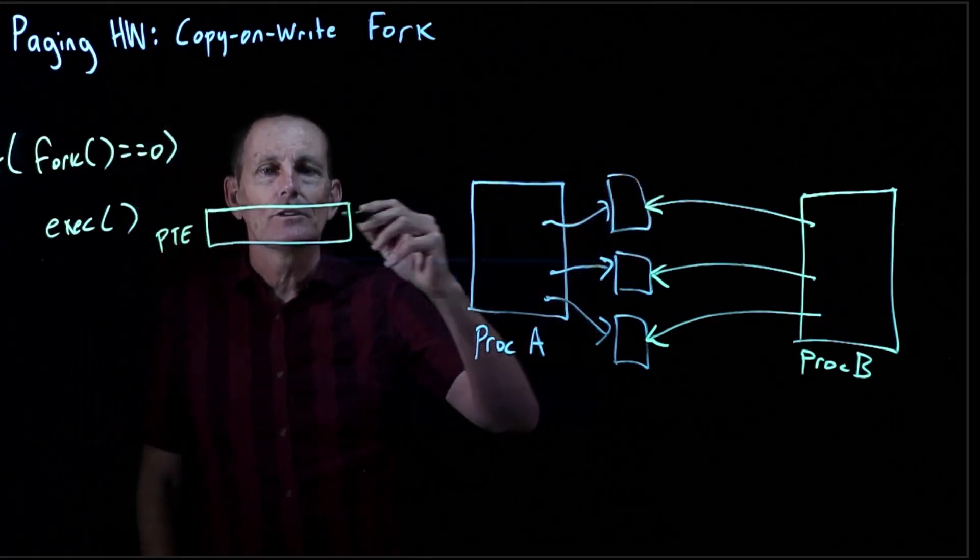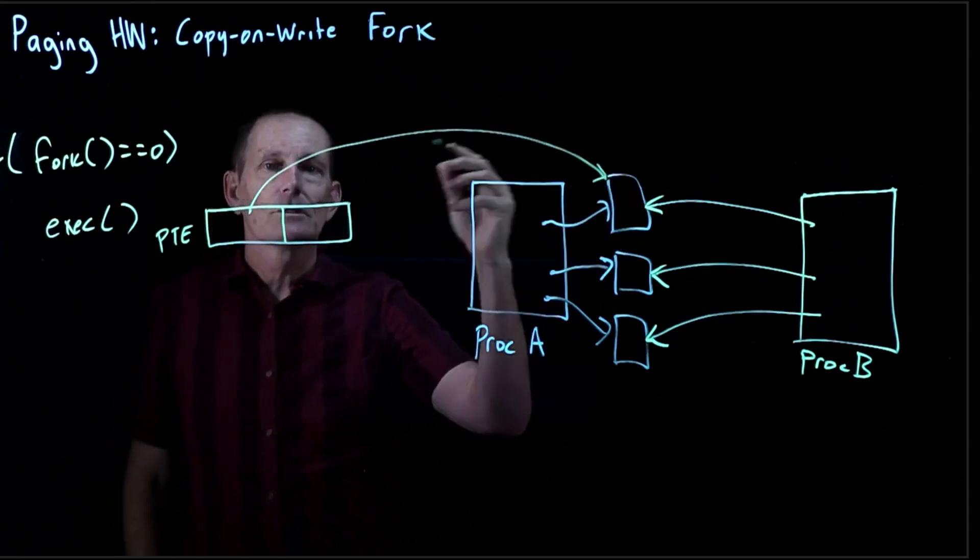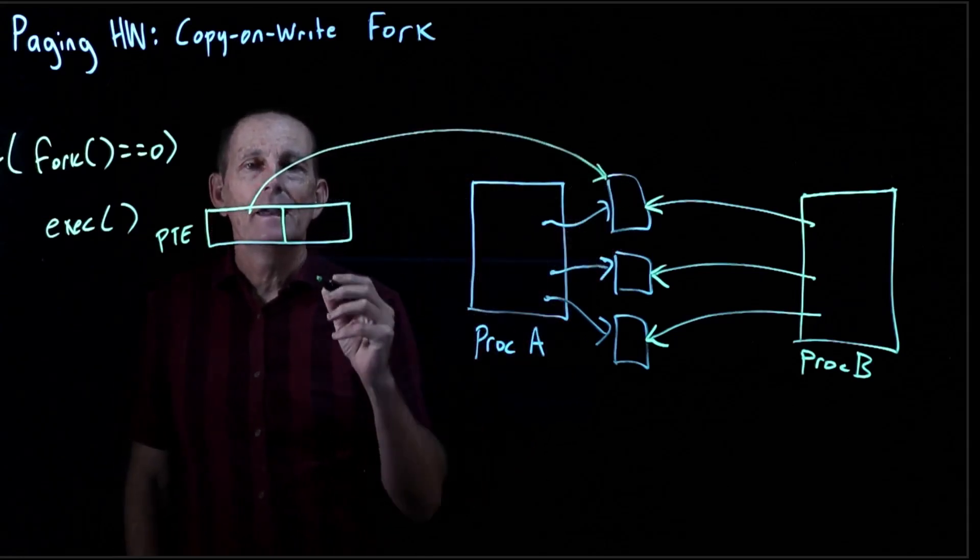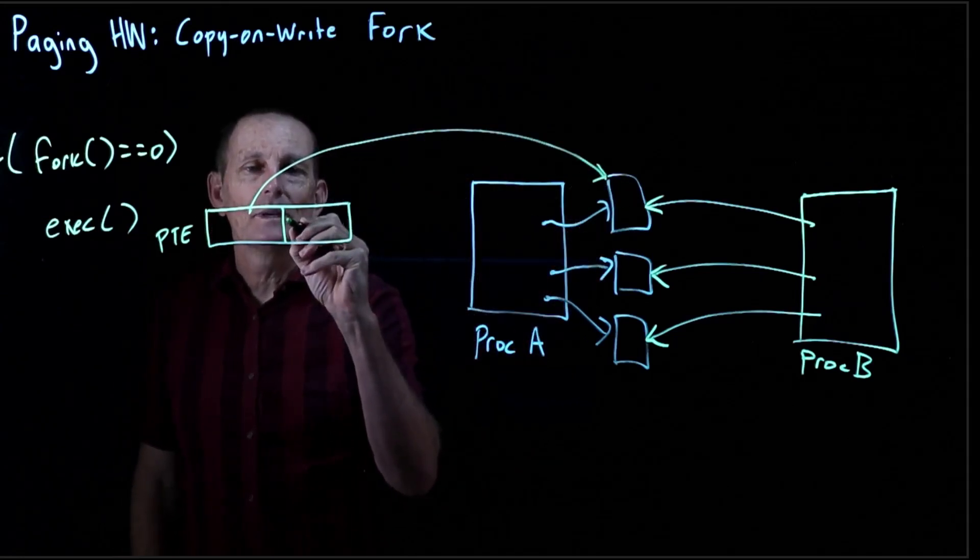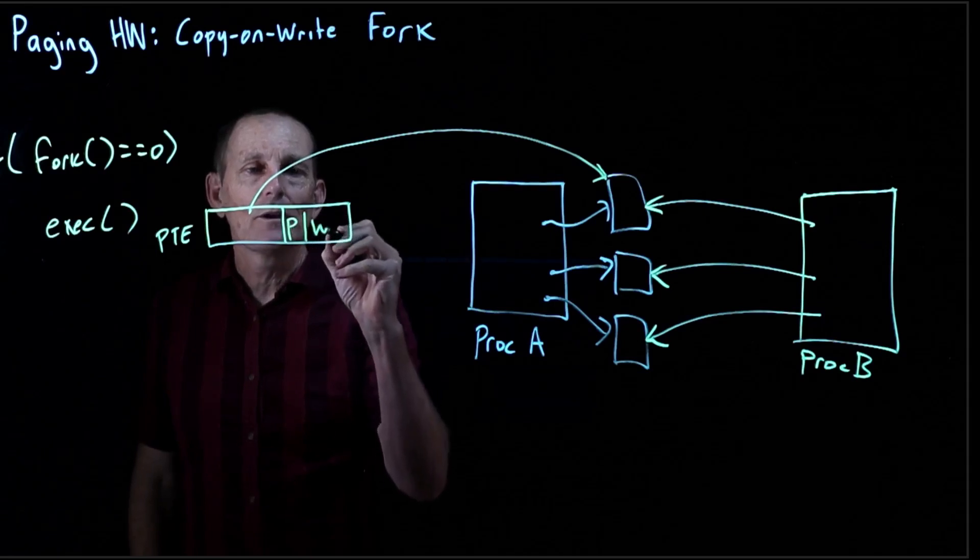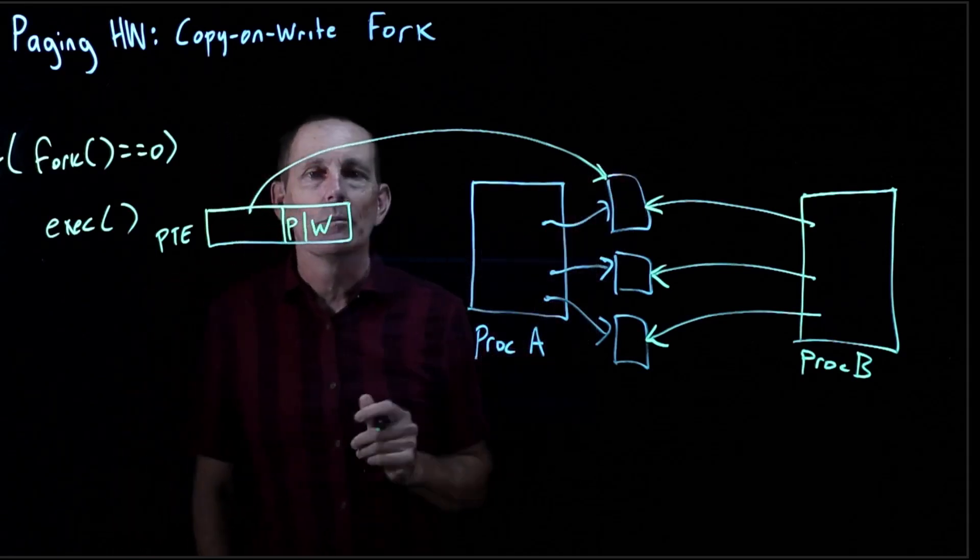In the page table entry for one of these pages, let's look at the page table entry for this one. So it's going to refer to this page. And then the bits here, of course we have a present bit. And to begin with, we had a write bit, because let's say this was a writable page.